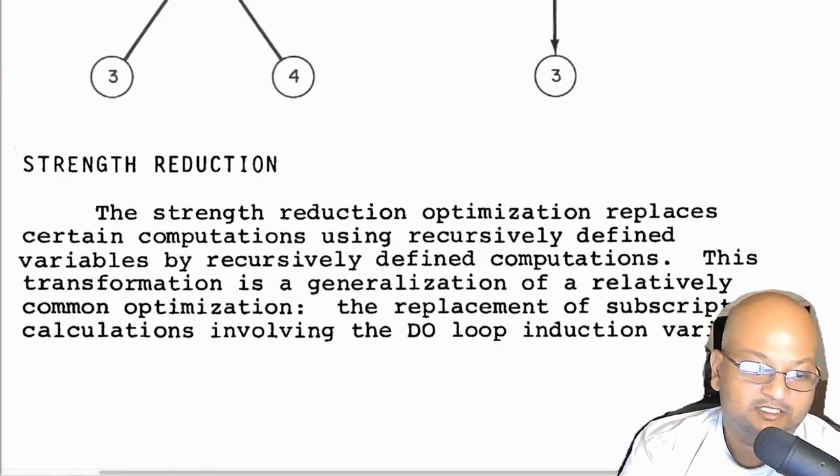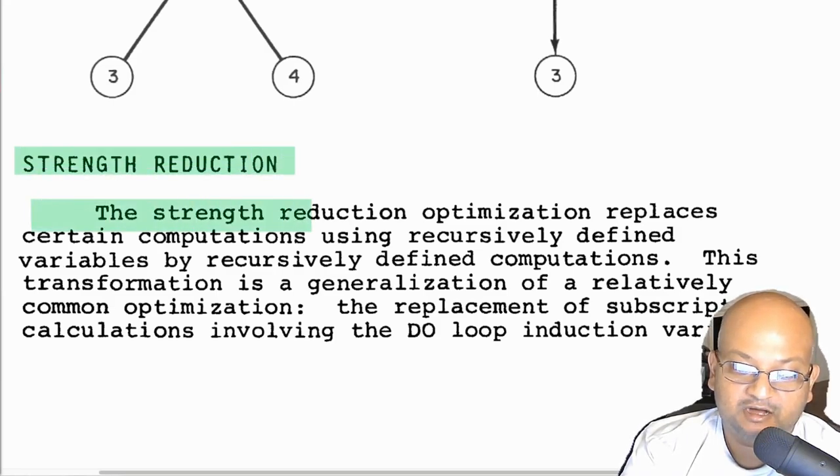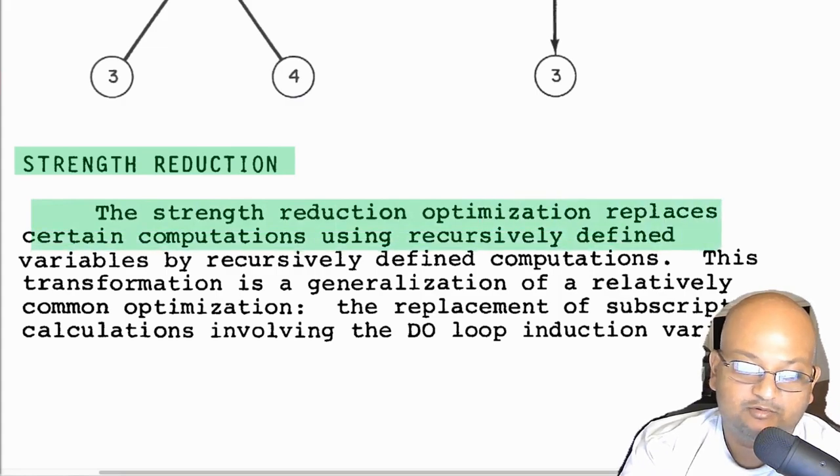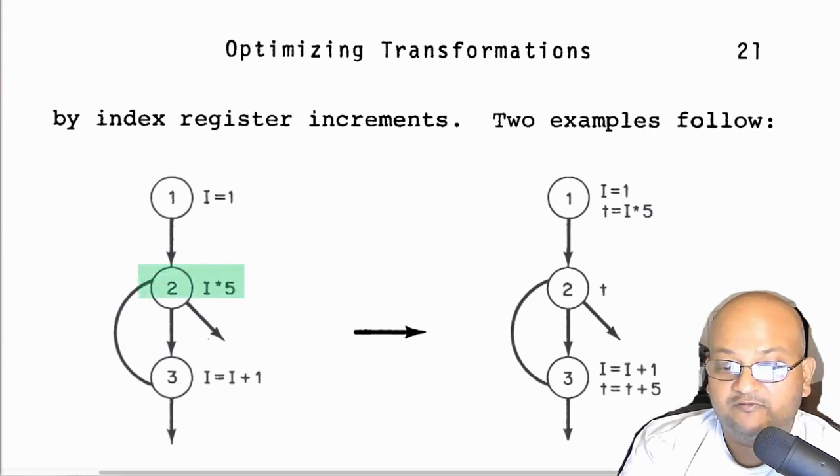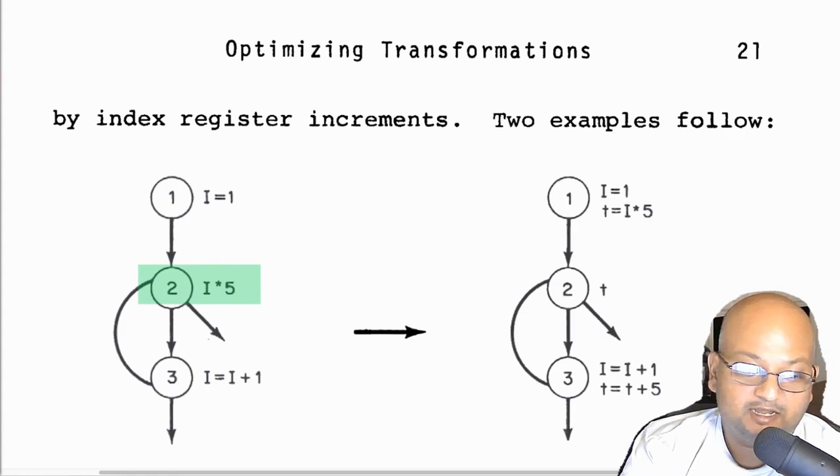The next optimization is strength reduction. The goal of strength reduction is to replace computations with equivalent computations that are simpler. The most common example of this is if you are inside a loop and you multiply the loop increment variable by five. Multiplication is a relatively expensive operation. You could instead do a series of transformations and instead of multiplying by five, add five in each iteration around the loop, thus ending up with additions instead of multiplication.